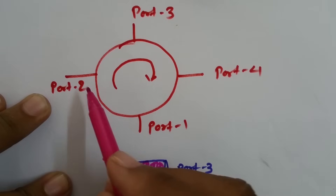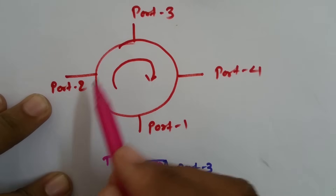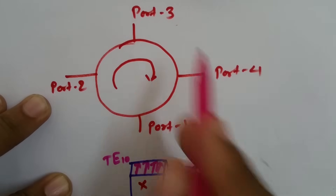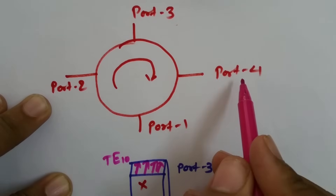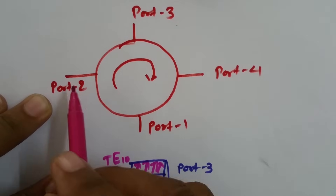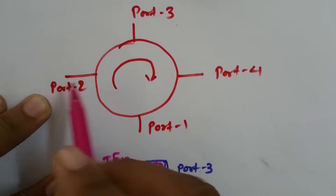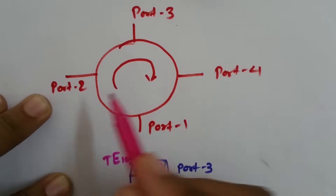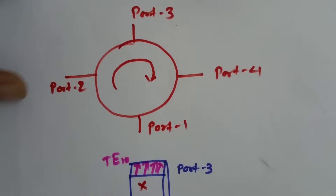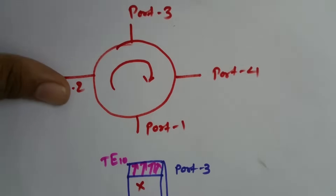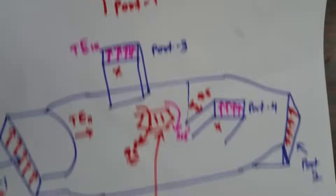Similarly, if input is at port 3, output will be at port 4, and at other ports like port 1 and port 2, output will be zero.